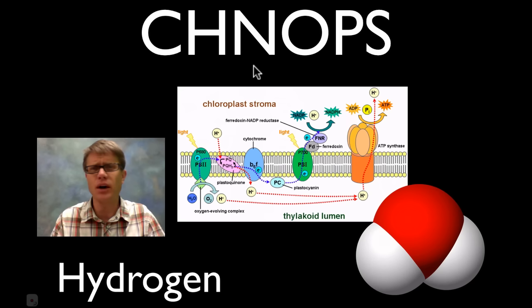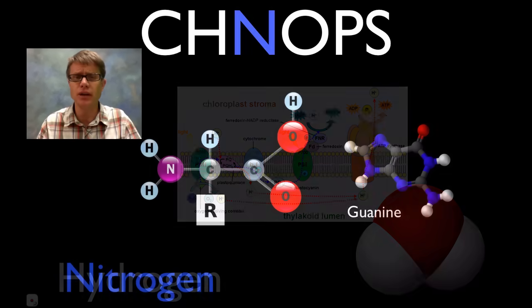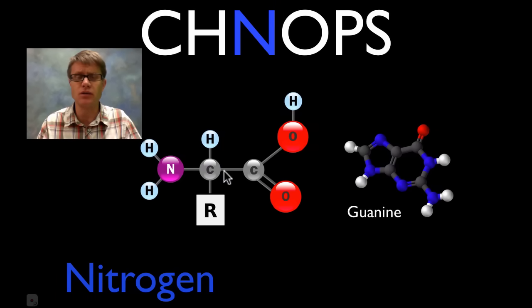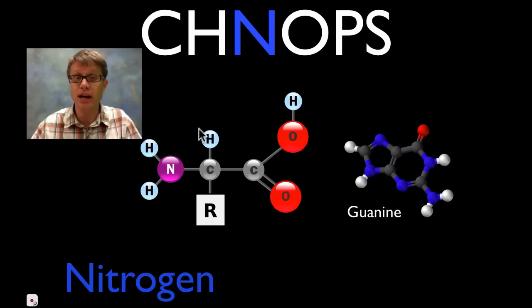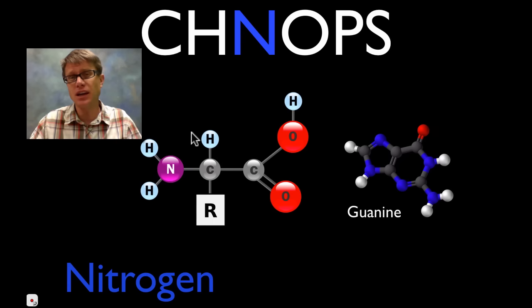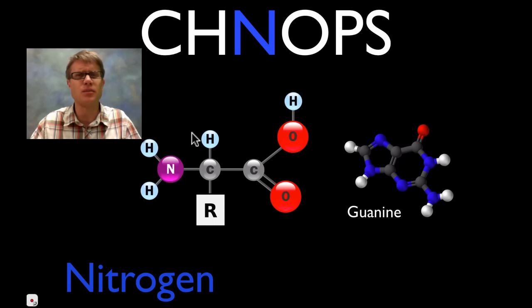So be thinking ahead — why do we need nitrogen? Well nitrogen we need for a couple of reasons. This right here is an amino acid. And remember DNA contains the blueprint to make life, but it's the proteins that actually make us the way we are.